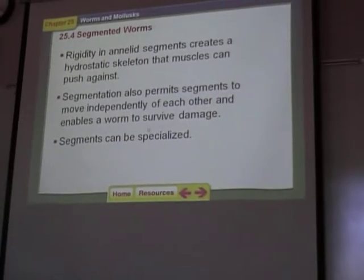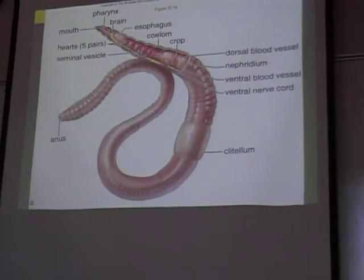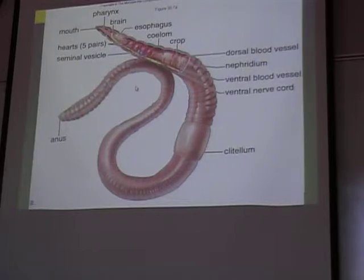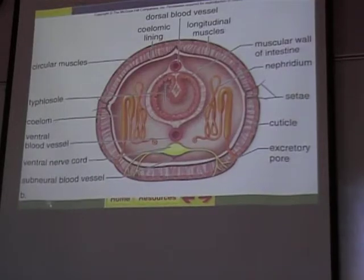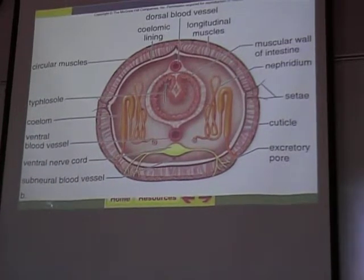Segmentation permits segments to move independently of each other and enables a worm to survive damage. Segmentation is very useful — segments can be specialized. For instance, this segment is specialized for reproduction. This segment is specialized to contain the brain. These segments are specialized to house the hearts, and so forth. Here, if we cut a worm in half and look inside, we see what it looks like. This is a single segment, and every segment has these parts.